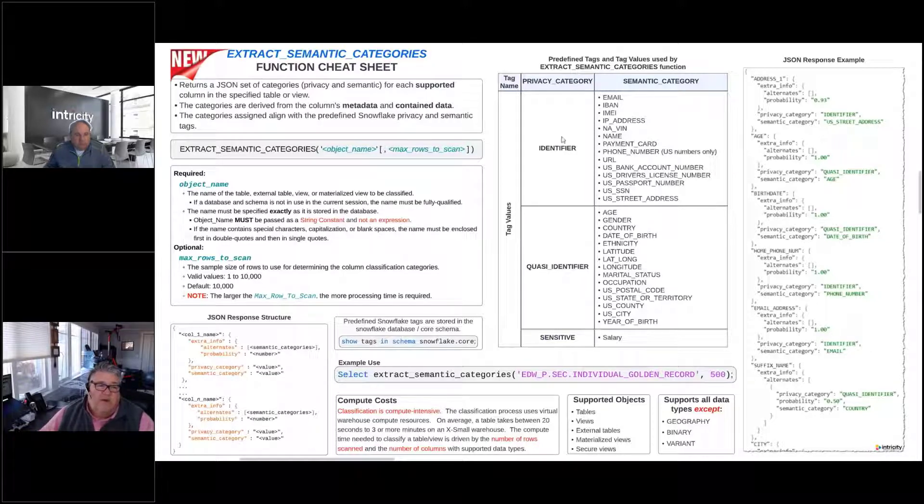So the privacy_category—we have three values right now: identifier, quasi-identifier, and sensitive. If you look at the identifier inside of the privacy_category of identifier, we have a level down with a little bit more detail and you can see the different items that we've got in here: email, IP address, name, your credit card number, some of these types of things. So these are really the hypersensitive, the highly sensitive items.